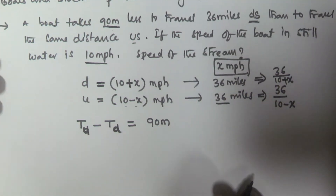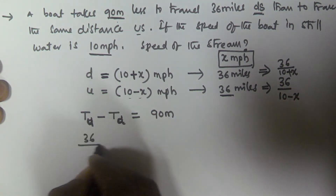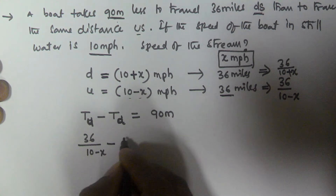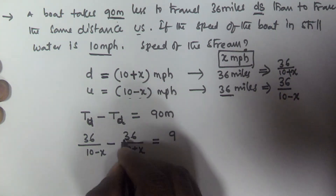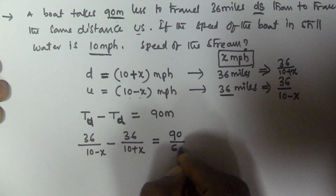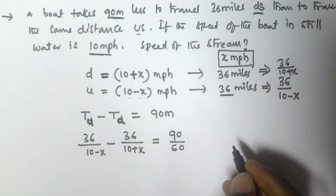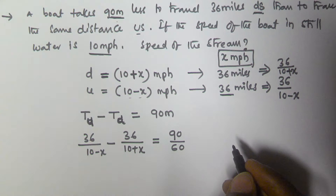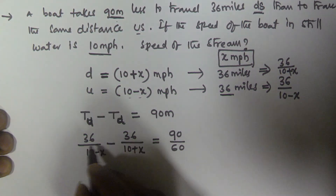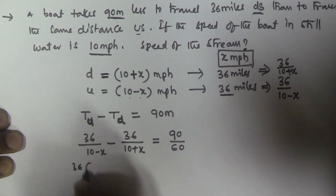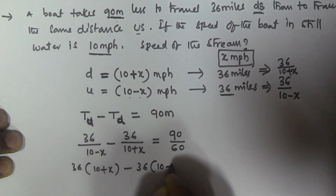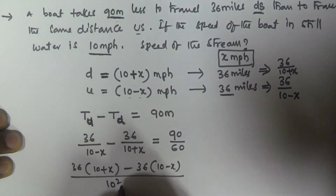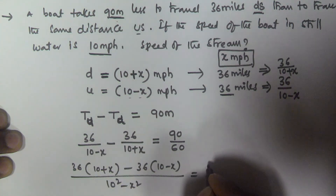The difference between these two times is 90 minutes. Substituting the values: 36 divided by (10 minus x) minus 36 divided by (10 plus x) equals 90 minutes. But these are in hours, so we have to convert 90 minutes into hours: 90 divided by 60, which is 3/2. So let's solve this equation: 36 times (10 plus x)...